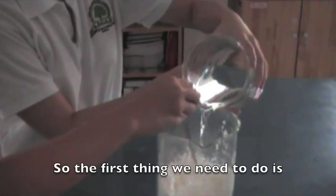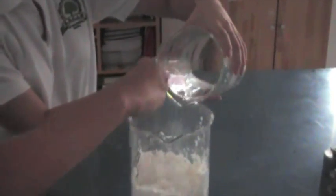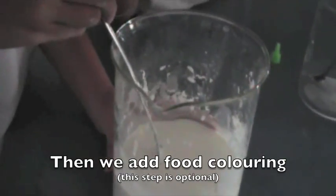The first thing we need to do is mix our cornstarch and water together. Then we add food coloring. This step is optional.